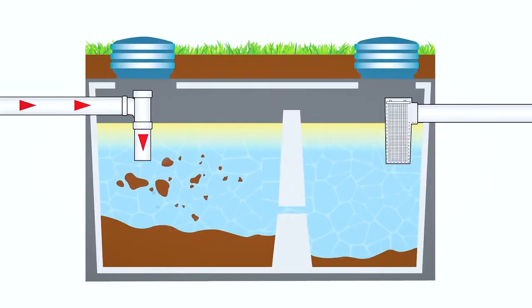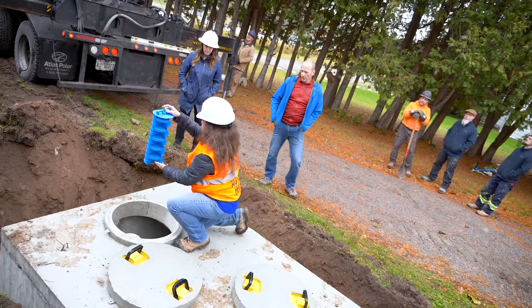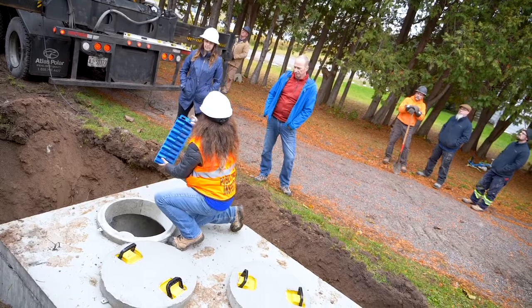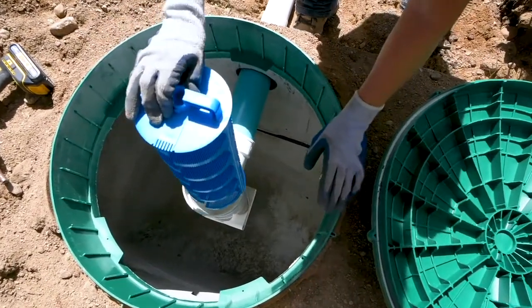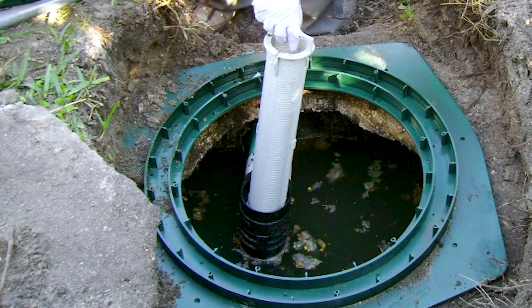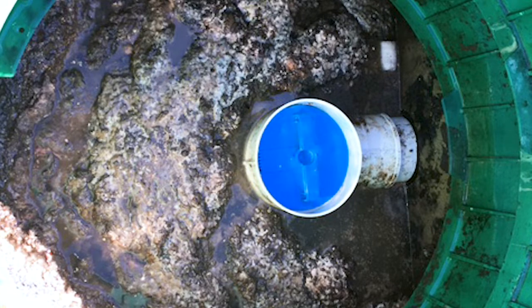Each tank has two chambers. The first retains most solids as the liquid enters the tank, and the second chamber captures the remaining solids as the water flows through the tank. The liquid then flows to the outlet of the tank to the leaching bed. But first, the liquid must pass through an effluent filter affixed to the outlet baffle. This filter removes smaller solids, preventing them from getting out and clogging the leaching bed. These effluent filters require routine cleaning and maintenance to remain functional and to prevent potential sewage backups.